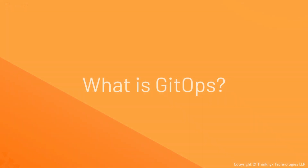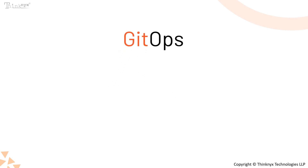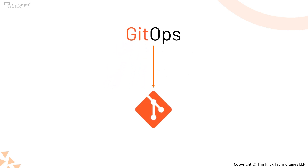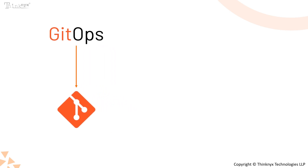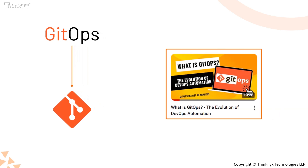Now, let's look at GitOps. GitOps is a methodology to manage and operate infrastructure using Git as the single source of truth. The GitOps approach is built upon the principles of DevOps. In a previous video, we covered these fundamental topics, so if you haven't seen it yet, be sure to check the link in the description below.